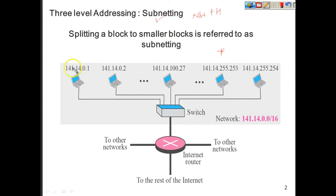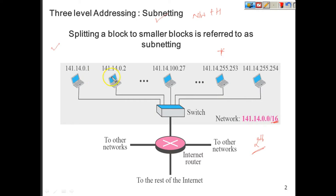In one scenario, there is one larger block of Class B. You can see 16 bits is assigned for the network. So you can have 2 power 16 IPs generated here, and all these IPs are part of this block. So far no subnetting is done and no sub-block is formed — this is only one block.